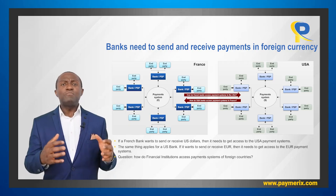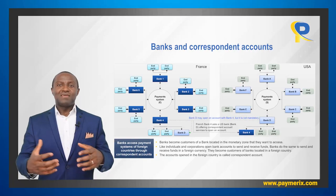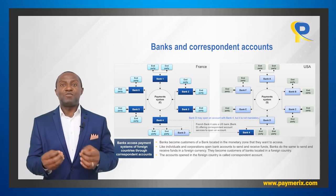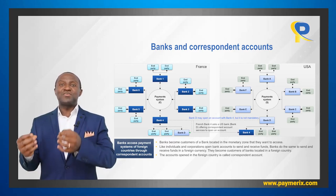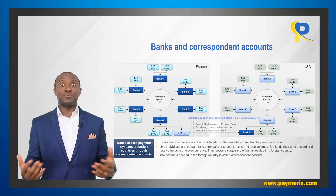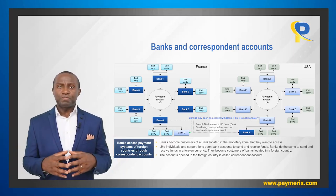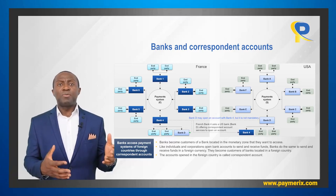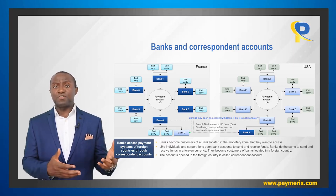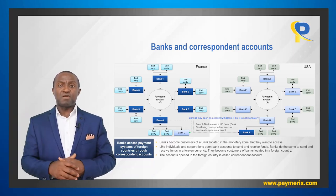Now the question is: how do banks access payment systems of foreign countries? The answer is actually quite simple — they become customers of a bank located in the monetary zone they want to have access to. A bank, customer of another bank? This may sound weird for beginners, but that is what they do. Like individuals and corporations open bank accounts to send and receive funds, banks do the same to send and receive funds in foreign currency. They become customers of banks located in the foreign country.